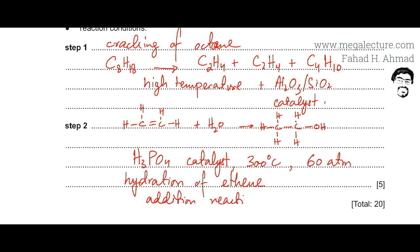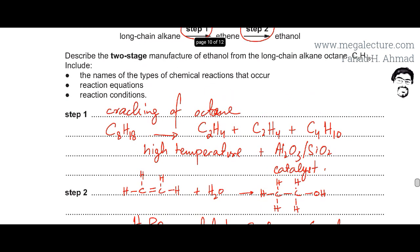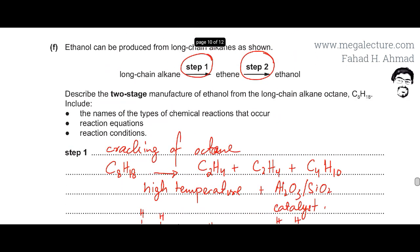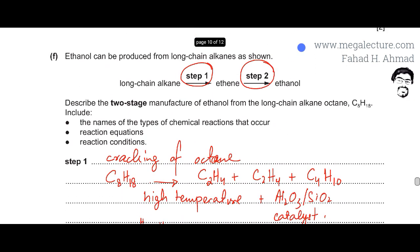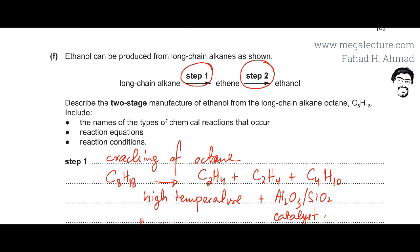This reaction is described as the hydration of ethene, or it can also be called an addition reaction. So step 1 is cracking, where a long-chain alkane is broken down into smaller molecules, and step 2 is the addition or hydration reaction of ethene to produce ethanol.